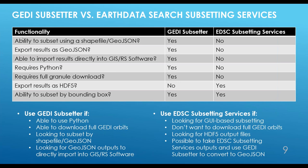On the other hand, I would recommend using the Earth Data Search subsetting services if you are looking for GUI-based subsetting, don't want to download full GEDI orbits before you get started, and are looking for output files in HDF5 format. You can also use the GEDI Subsetter data prep script to convert Earth Data Search subsetting outputs from HDF5 to GeoJSON files. If you're working with GEDI version 2 data in the future, it's probably preferable to use the Earth Data Search subsetting services and then optionally use the data prep script to convert to GeoJSON if desired.